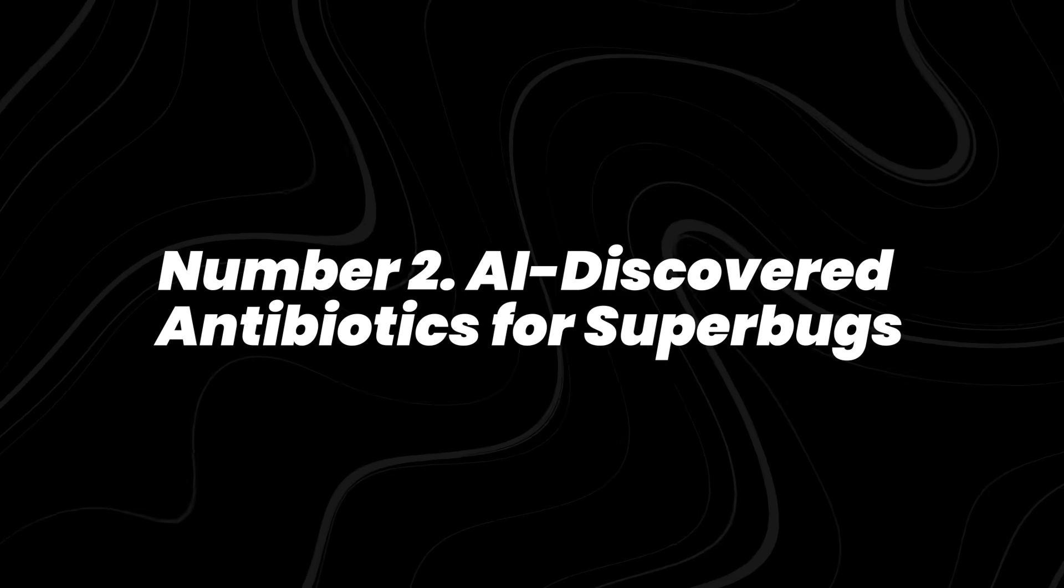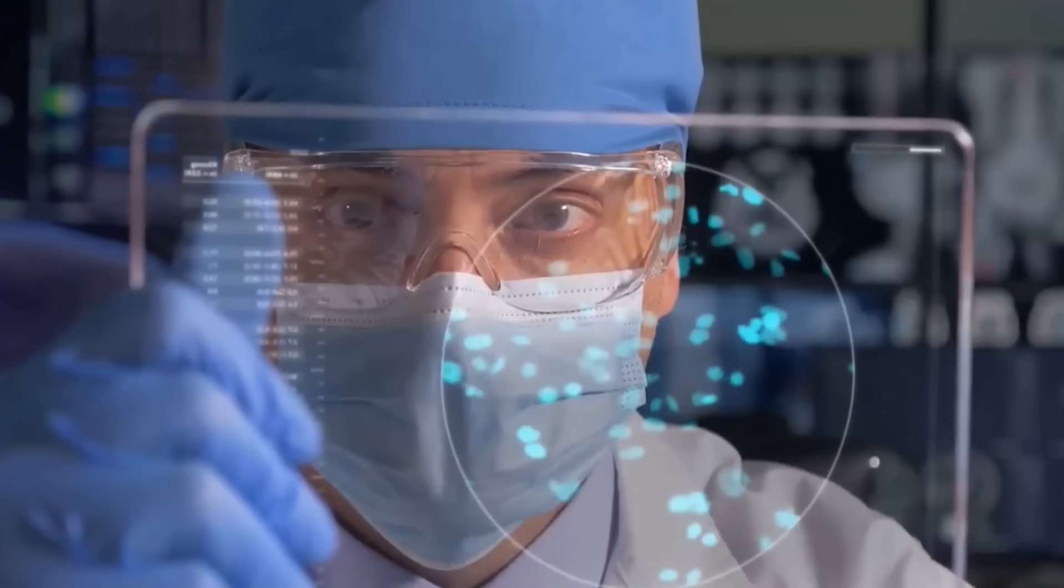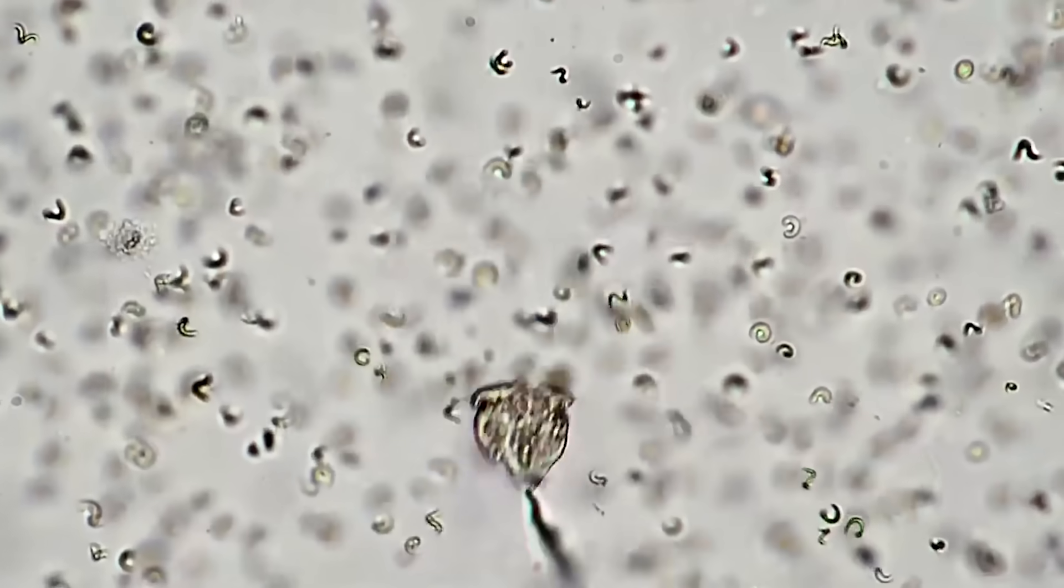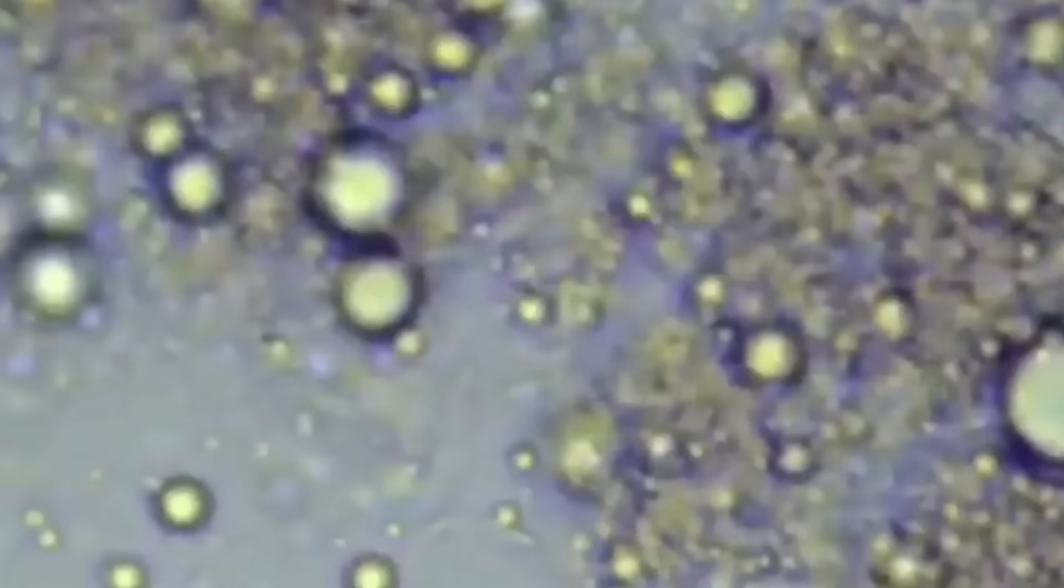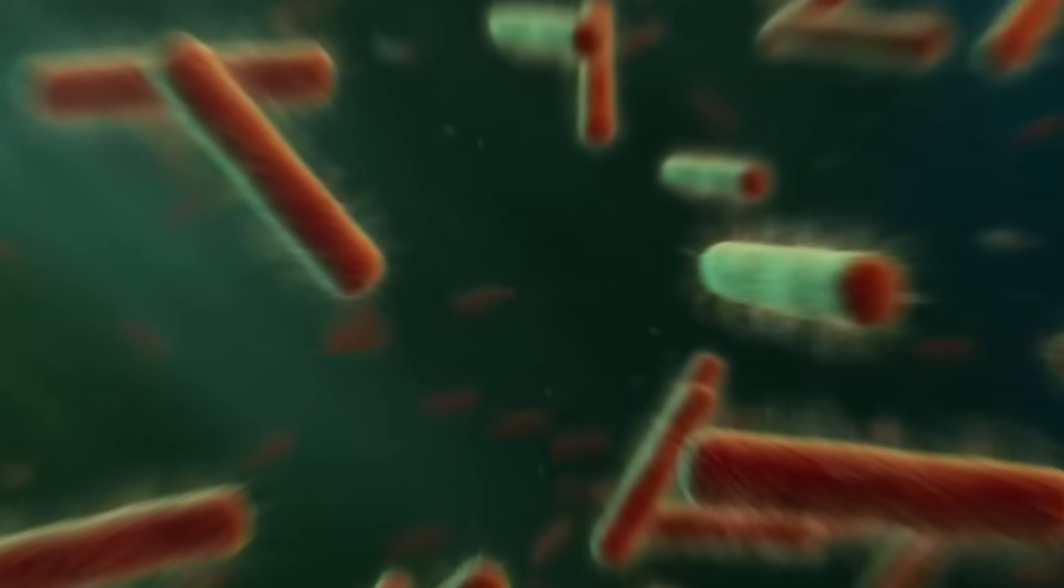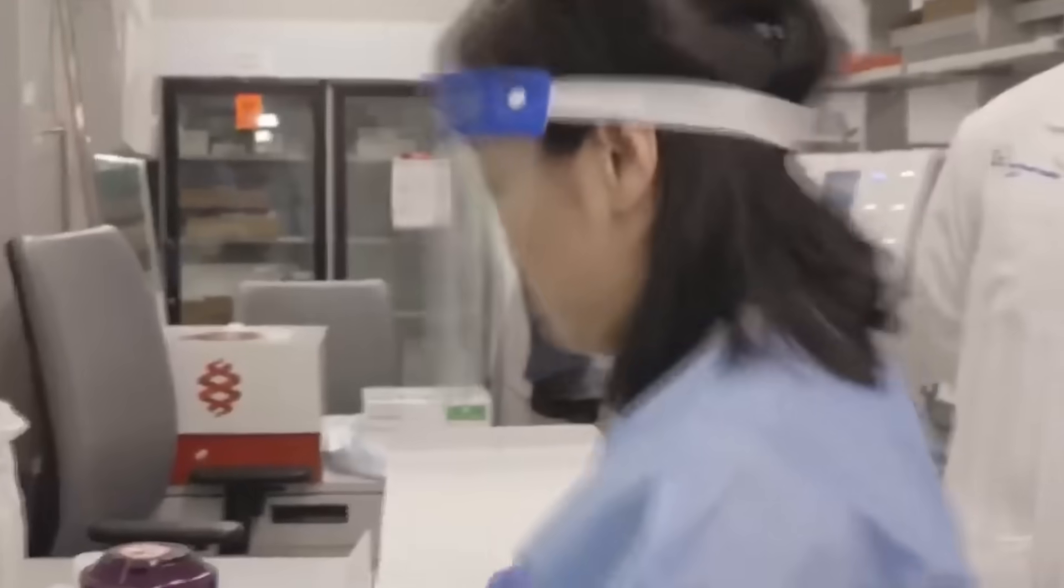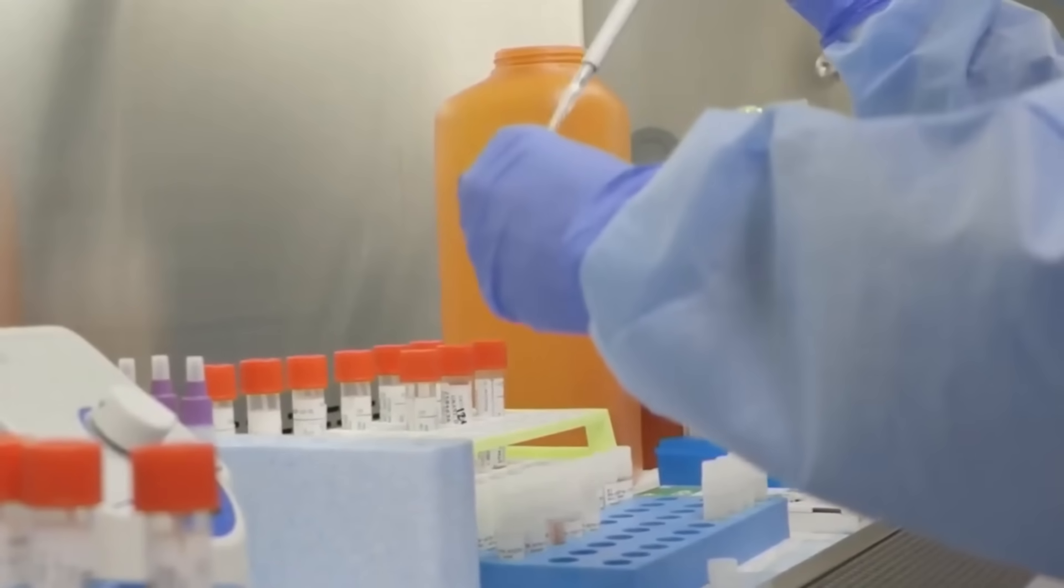Number 2, AI-discovered antibiotics for superbugs. In 2025, scientists at MIT and McMaster University used generative AI to design new antibiotics that kill drug-resistant superbugs like MRSA and Acinetobacter baumannii. These bacteria are on the World Health Organization's list as top global threats. The AI screened hundreds of millions of chemical compounds in just days and discovered molecules that outperformed some existing antibiotics in lab tests.